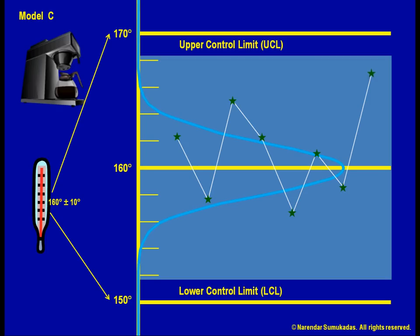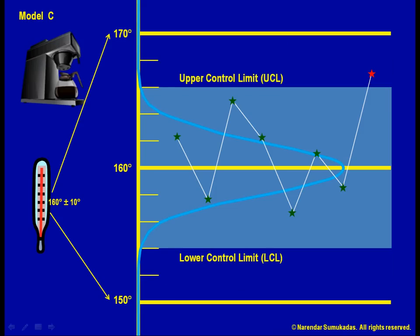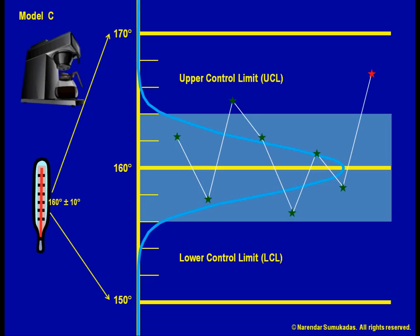Let us say I set my alarm settings, the UCL and LCL benchmarks, at two standard deviations on either side of the mean. Every time I get an observation outside this band, I switch off the coffee machine, rip it apart, and service it.